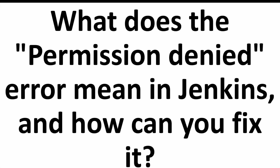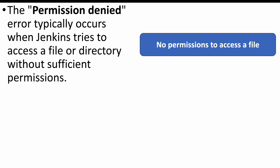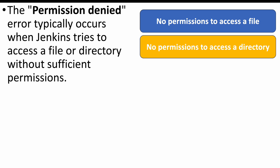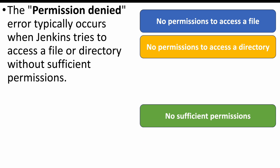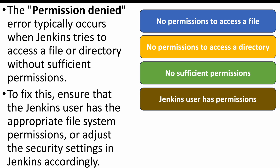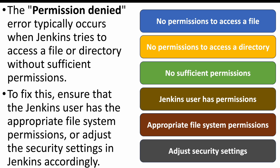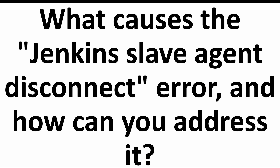The next question: what does the permission denied error mean in Jenkins and how can you fix it? This error indicates Jenkins does not have the necessary permissions to access a file or directory. By default, Jenkins uses the 'jenkins' user for all actions, so we need to check if that user has the appropriate file system permissions and adjust the security settings accordingly.